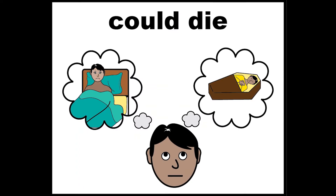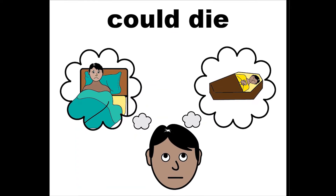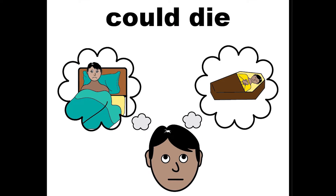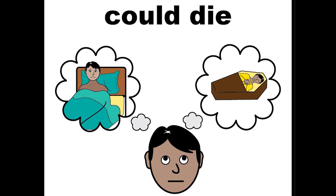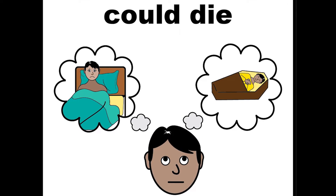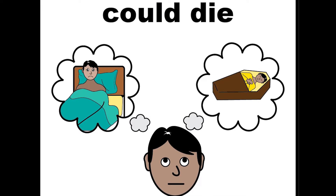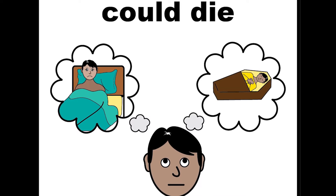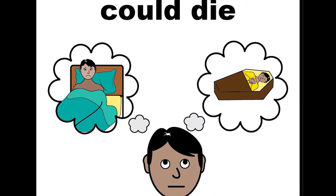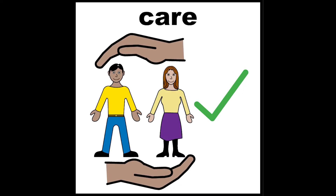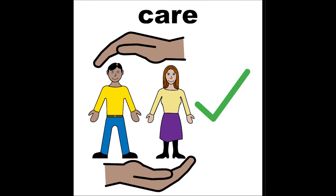People with learning disabilities die on average 15 to 20 years sooner than the general population. Some of these deaths do not need to happen. In some cases they can be prevented with good quality health care. This is a health inequality.